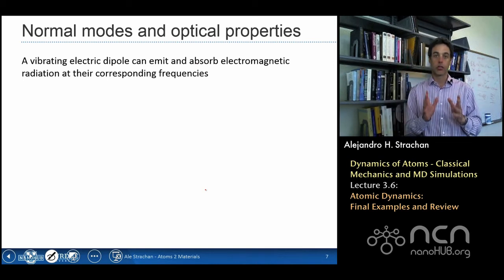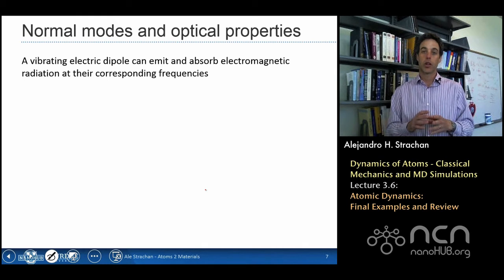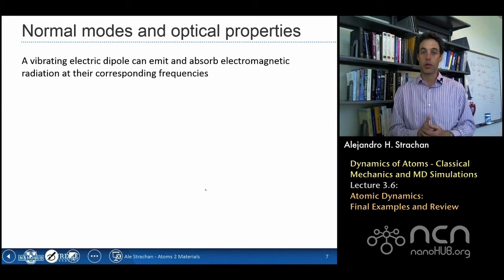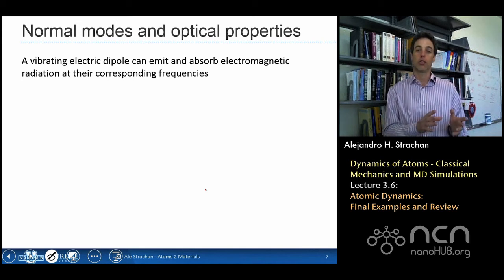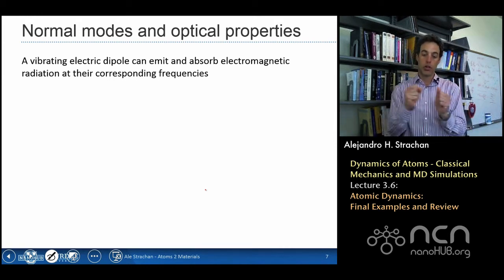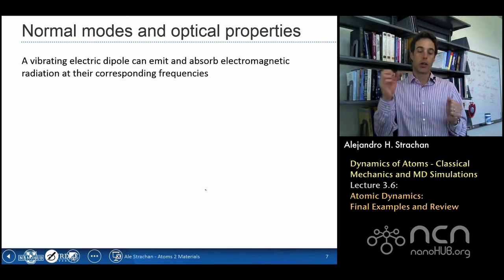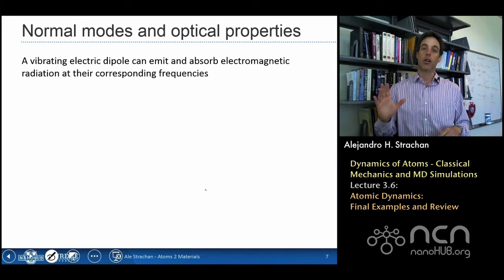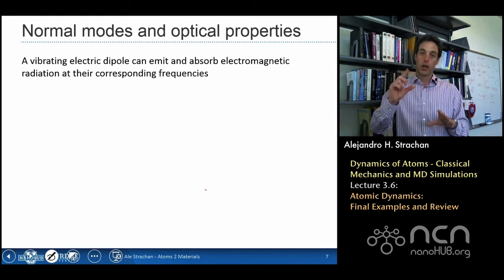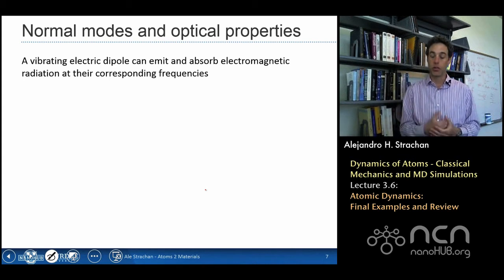This information that we've collected, this description of the dynamics of a material in terms of vibrational modes, in terms of normal modes, is very useful for many things. As we said earlier, we're going to use this next week to compute thermal properties of materials, but now we're going to discuss how I can use that and make use of that information to compute optical properties. So if I have a dipole moment oscillating in time, a vibrating dipole, let's say an OH atom that's vibrating, because the dipole moment is changing with time, then an accelerated charge emits electromagnetic radiation and can absorb electromagnetic radiation.